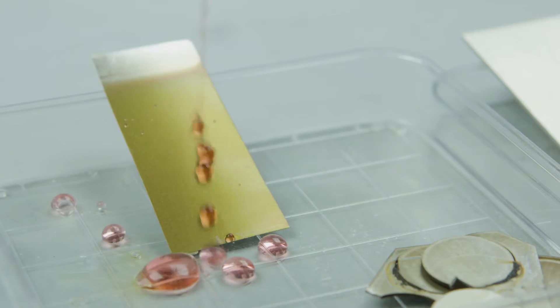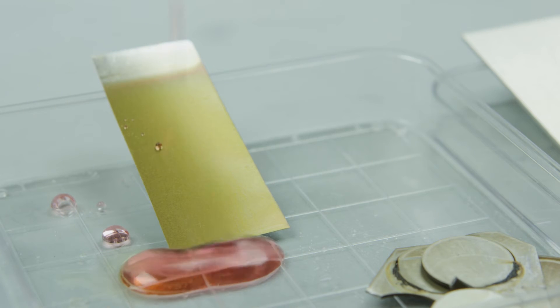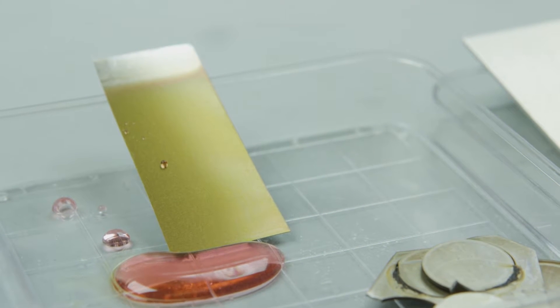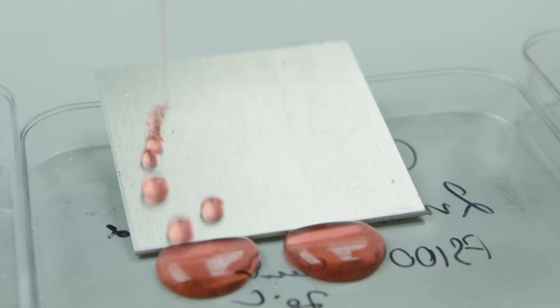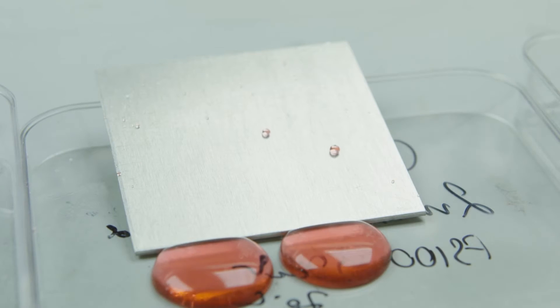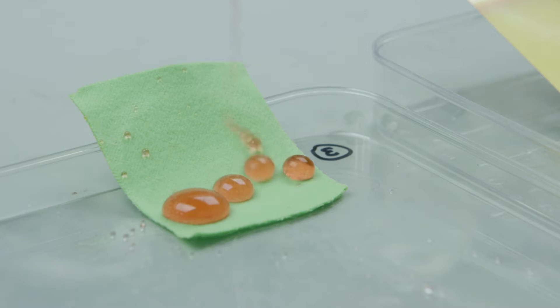A good example of the impact of the technology to market program is the Harvard SLIPS project. We create materials, any materials really, whether it's metals or polymers or glass that are coated with a layer of a liquid and everything slips on the liquid.